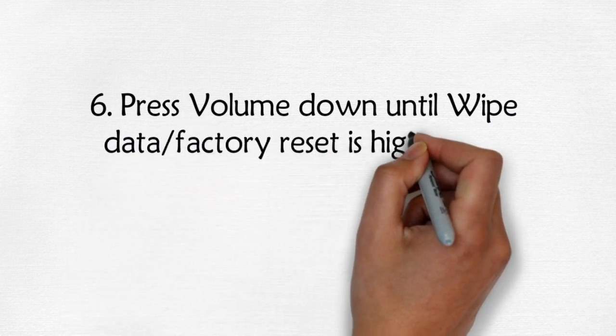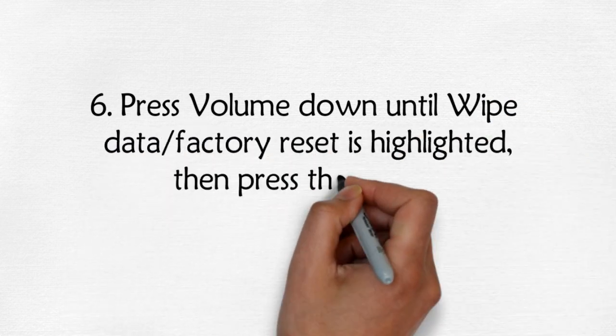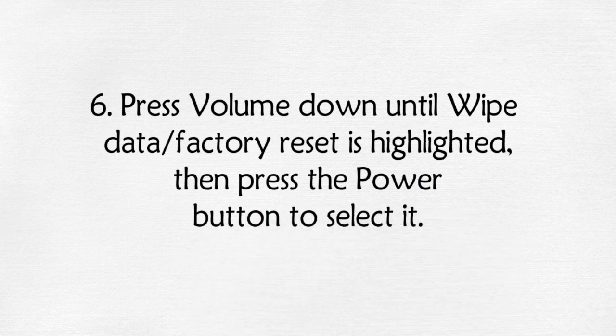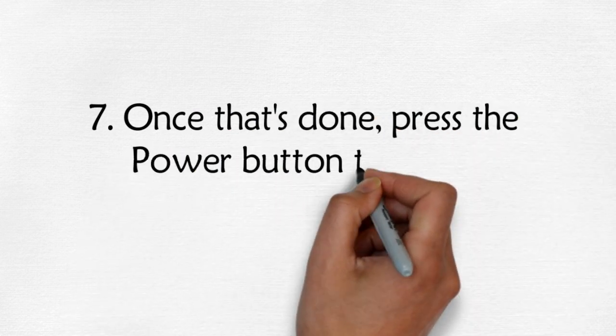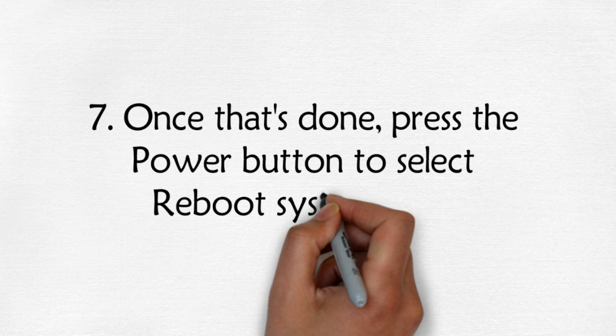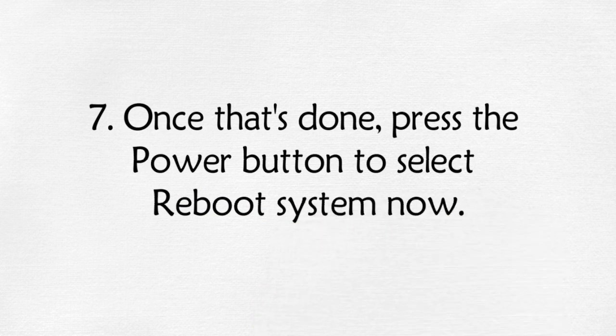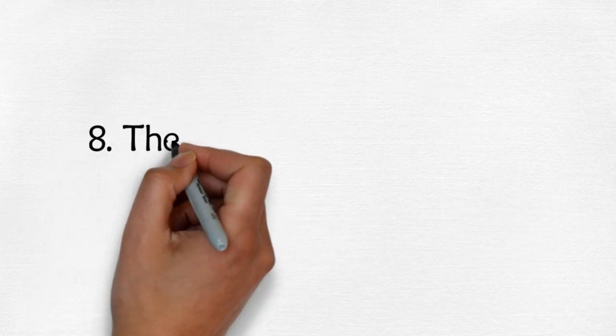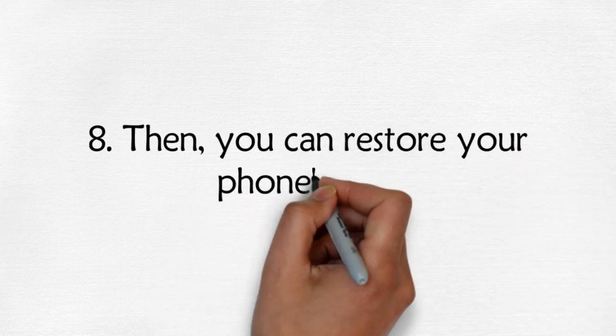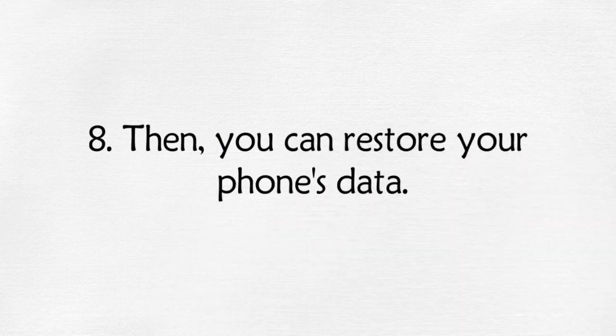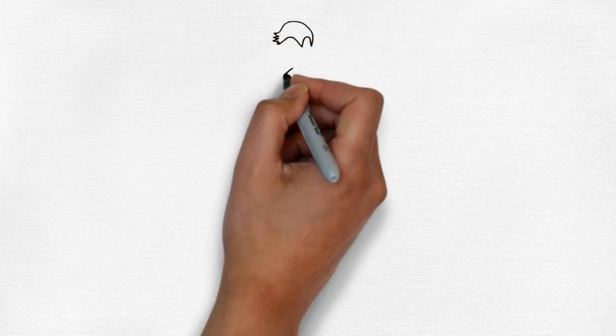Step 6: Press volume down until 'Wipe data/factory reset' is highlighted, then press the power button to select it. Step 7: Once that's done, press the power button to select 'Reboot system now'. Step 8: Then you can restore your phone's data.